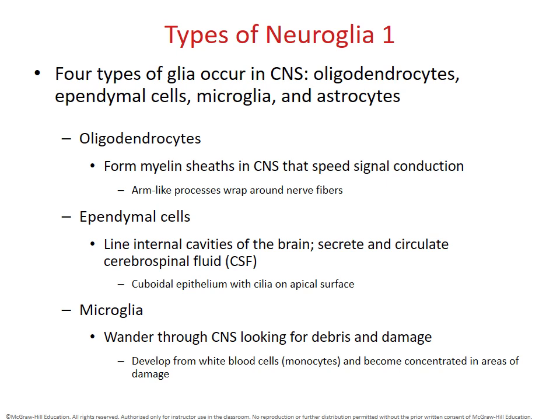We're going to start with the four types in the central nervous system, beginning with oligodendrocytes. Oligodendrocytes are interesting glial cells with many cytoplasmic extensions radiating out from a cell core — almost like an octopus with many arms. The job of oligodendrocytes is for these arms to wrap themselves around axons, forming a structure known as a myelin sheath. In the central nervous system, this specialized wrapping around axons is created by the oligodendrocyte. Myelinated axons also occur in the peripheral nervous system, but that involves a different type of glial cell.